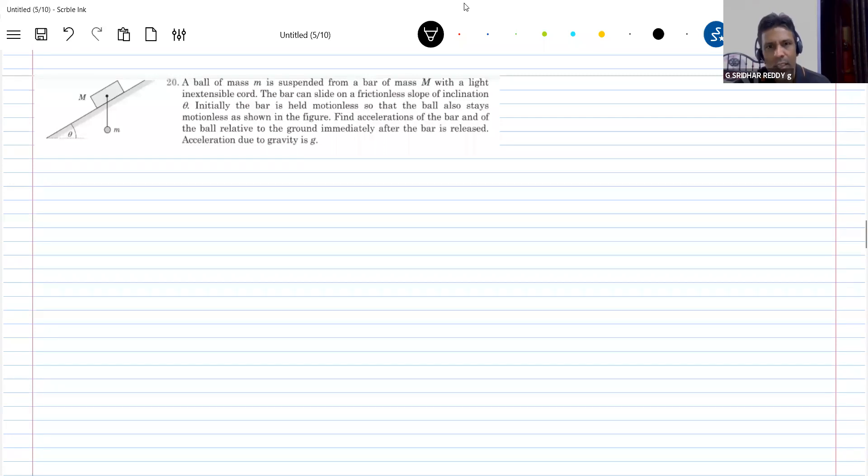The bar can slide on a frictionless slope of inclination theta and the bar is held motionless so that the ball also stays motionless as shown in the figure. Find the acceleration of the bar and of the ball immediately after the bar is released.